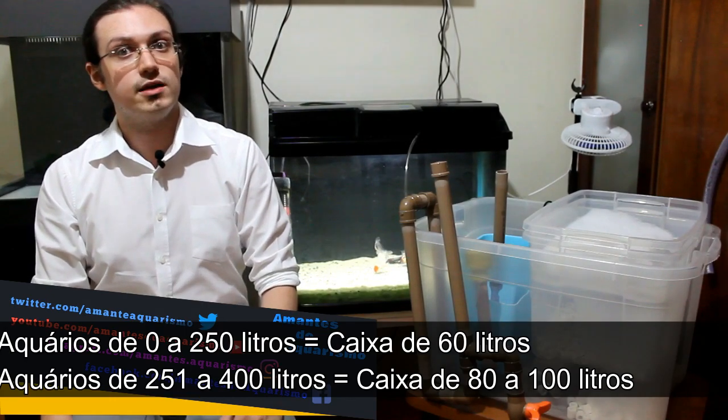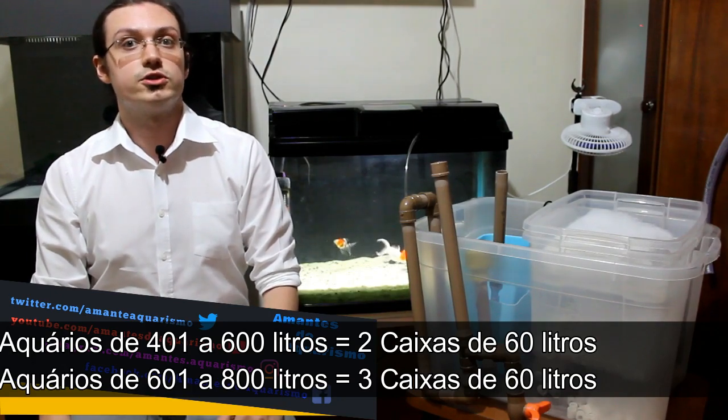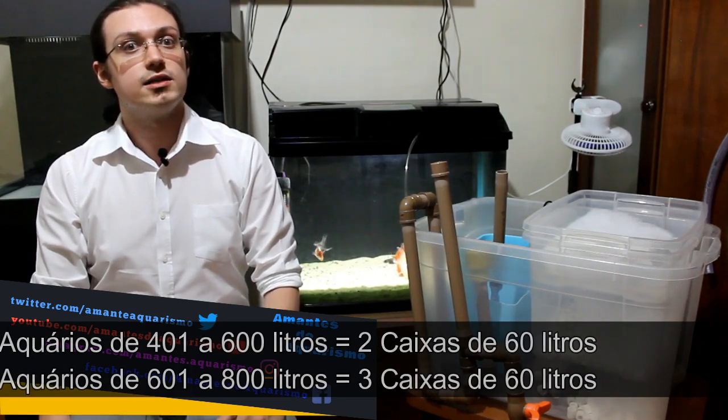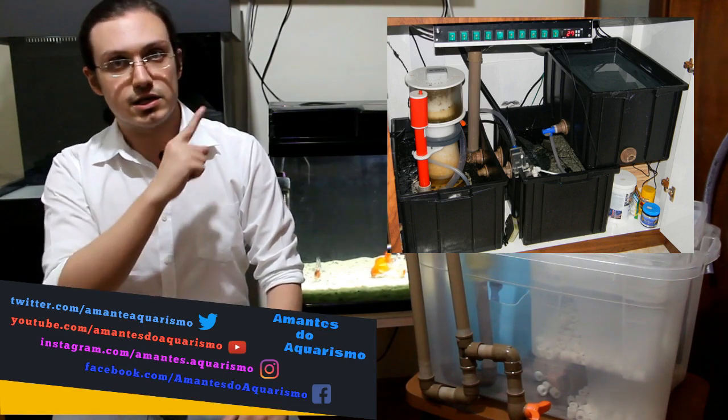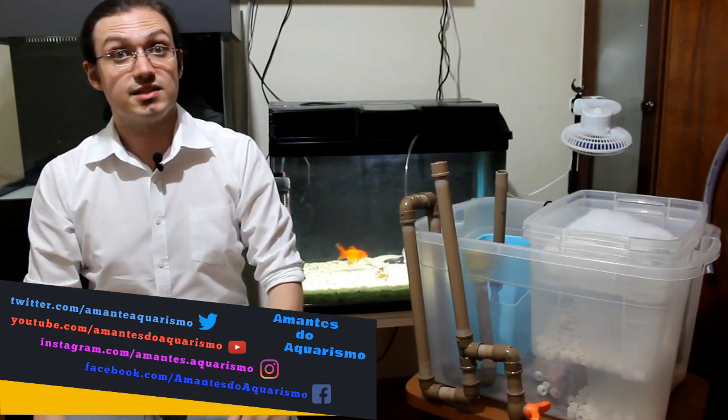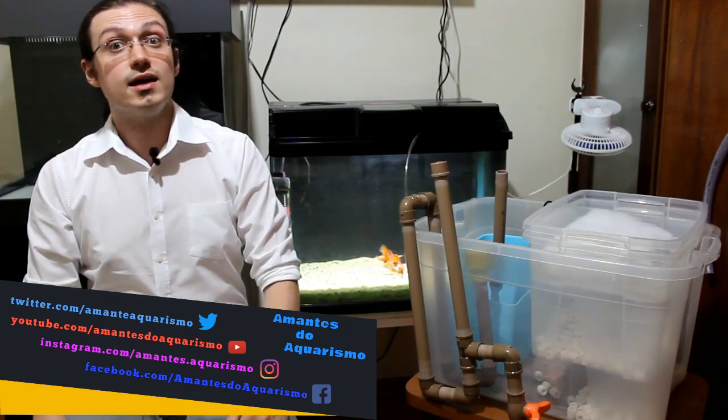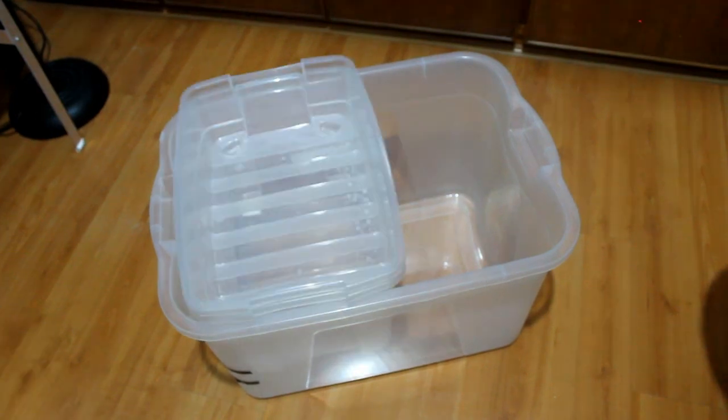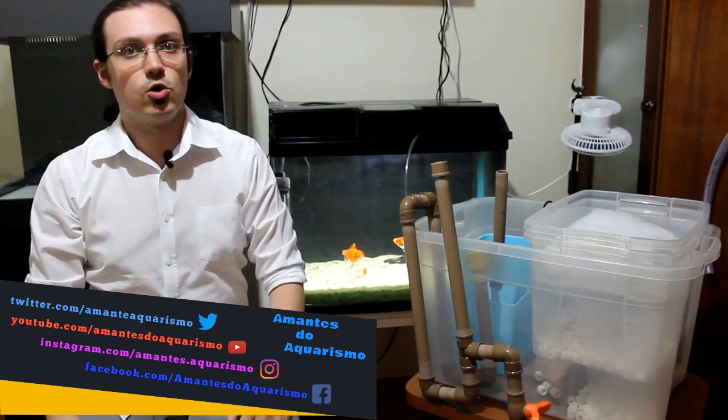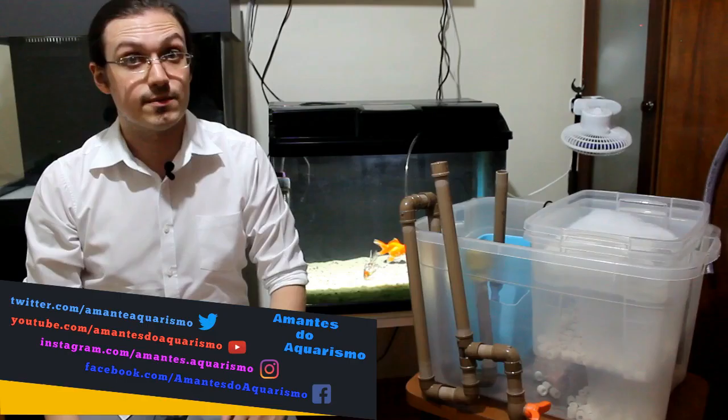Caso o seu aquário seja muito comprido, com mais de 300 litros em volume, recomendo que façam um projeto com mais de uma caixa se conectando via canos, assim como esse da imagem ao lado. Já as outras caixas devem possuir uma largura ou comprimento o suficiente para que seja possível encaixar suas alças na caixa maior. Já a caixa onde ficará a bomba deve ter uma boa altura, pois iremos cortá-la mais para frente.